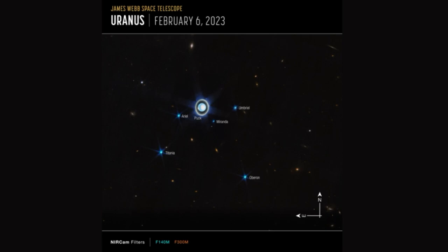Currently, it is spring at the northern pole of Uranus. This can be seen in the image, with the right side of the ice giant brightening at its north polar ice cap, which is facing toward the sun.